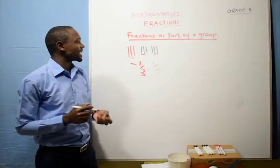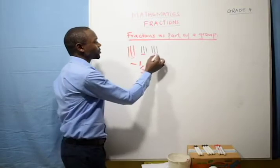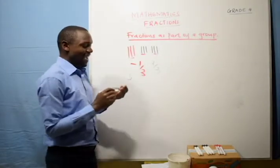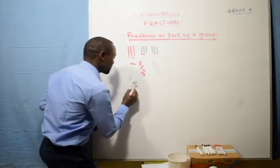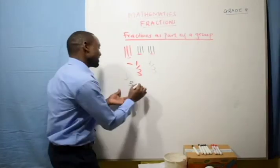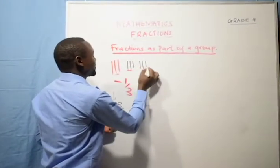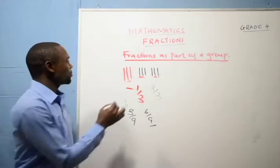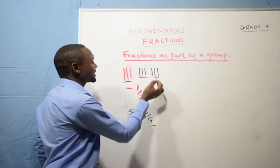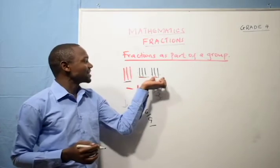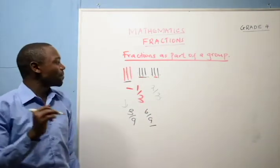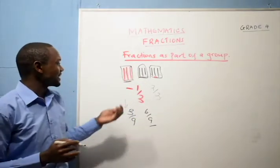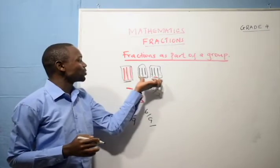That is how we represent fractions as a group. If we want to represent as the total, we have nine pens, and of the nine pens, three over nine are red, and six over nine are black. When we place them in groups, we have three groups — one group of red pens and two groups of black pens. That is why we say one of the groups is red and two of the groups are black.